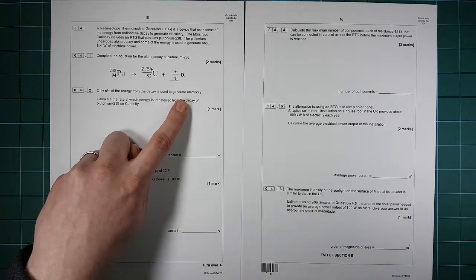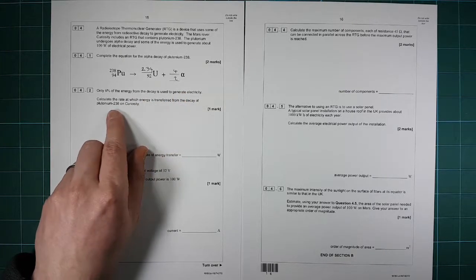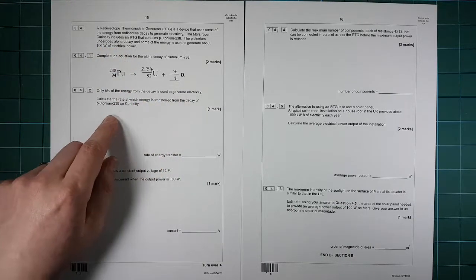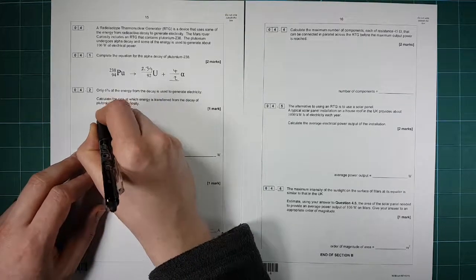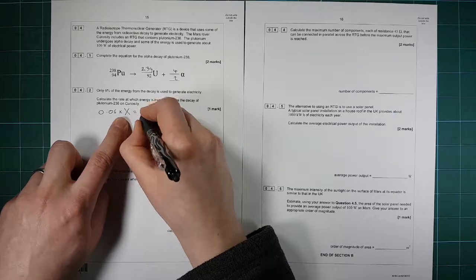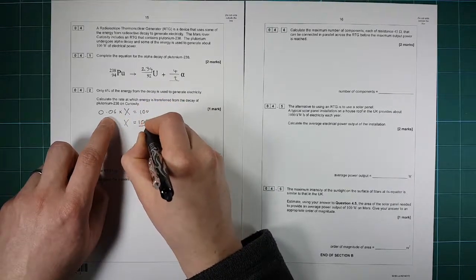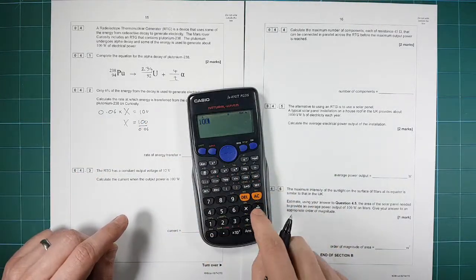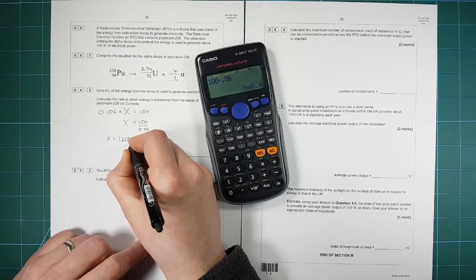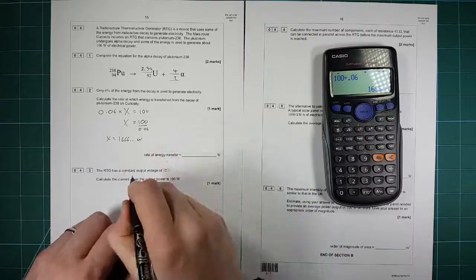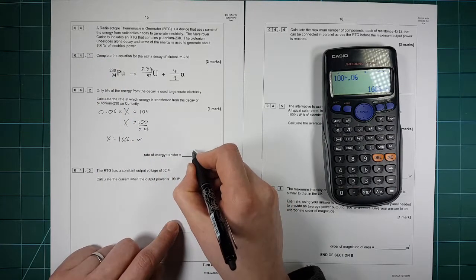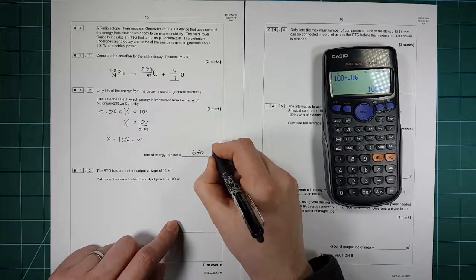Only six percent of the energy from the decay is used to generate electricity. Calculate the rate at which energy is transferred from the plutonium. So it's a hundred watts of electrical power, so we need to think, so the 0.06, that's six percent, times by the total amount of power that we produce is equal to 100 watts. So x is equal to 100 divided by 0.06, so that is a total of x is equal to 1666 dot dot watts. So what we want to do it to, let's see, two or three significant figures, we don't know, so I'm going to write it to three significant figures: 1670 watts to 3 s.f.